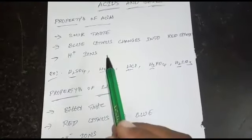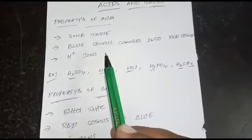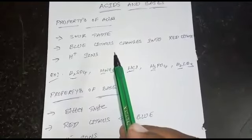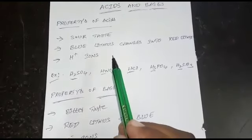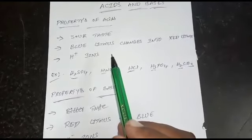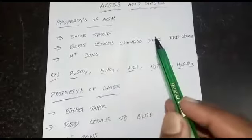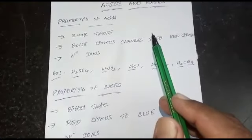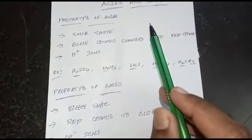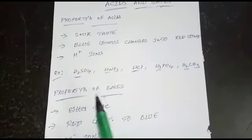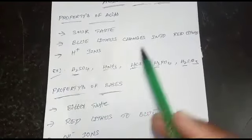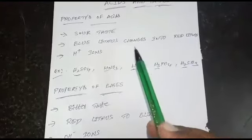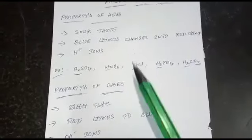Now for natural acids — for example, lemon contains citric acid. Tea contains tannic acid. There are many natural acids found in food items, and we will explain more of those.